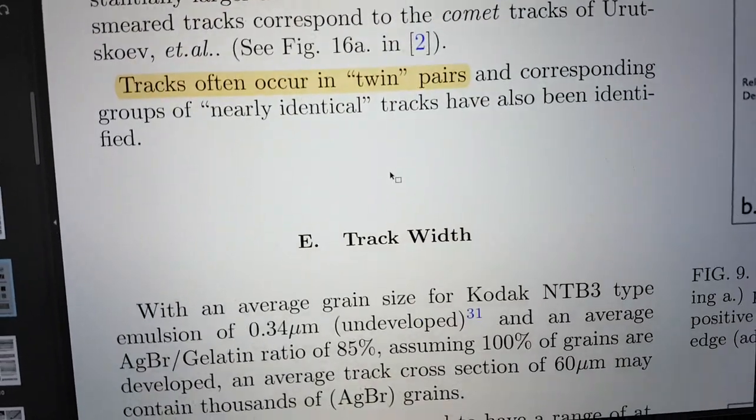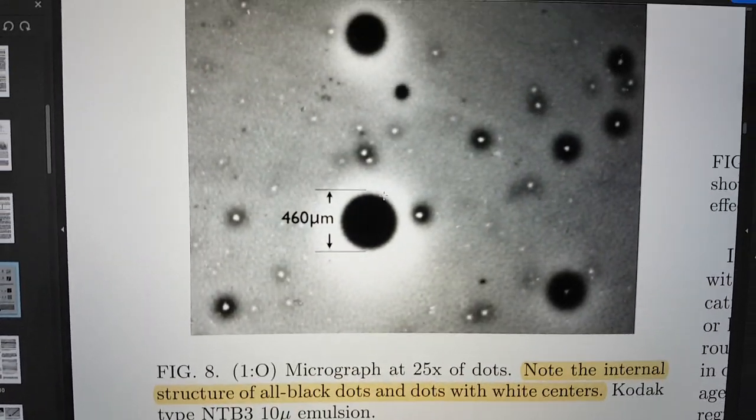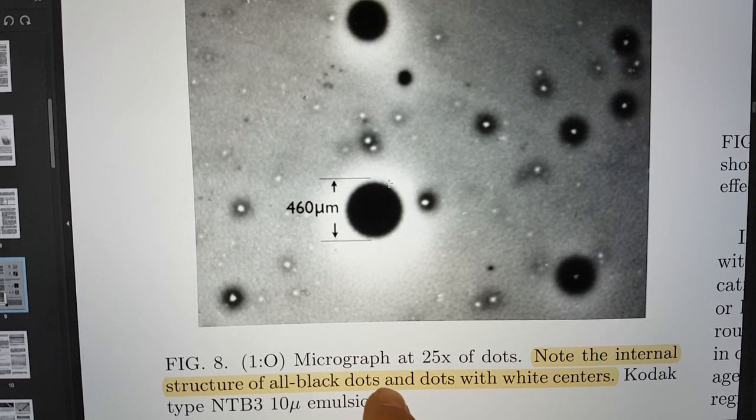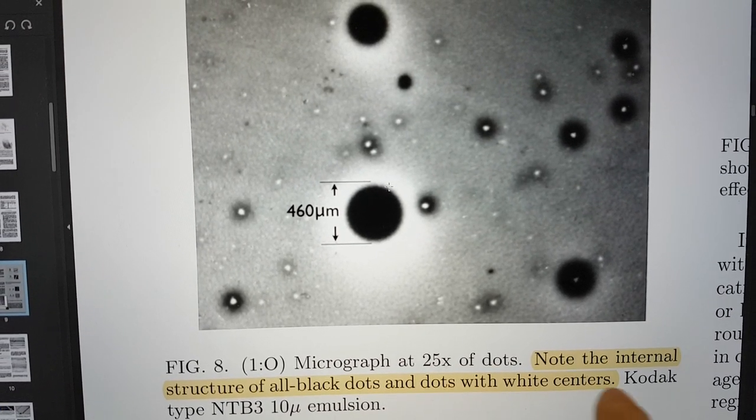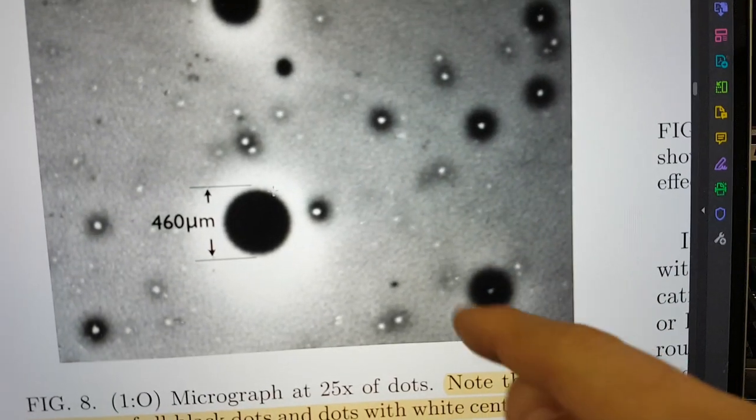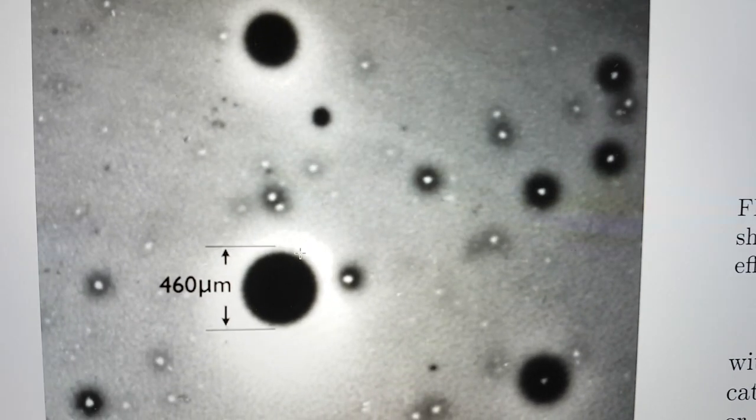Now, if we go down and look at this, this is his photograph and he's saying, Note the internal structure of all black dots and dots with white centers. So, here we have a ring and a spot. A ring and a spot. Where have we seen this before?